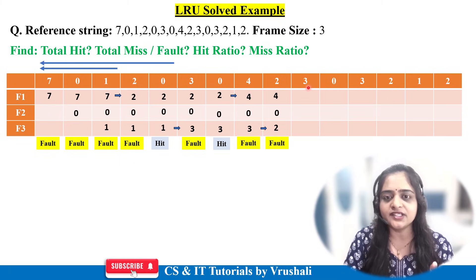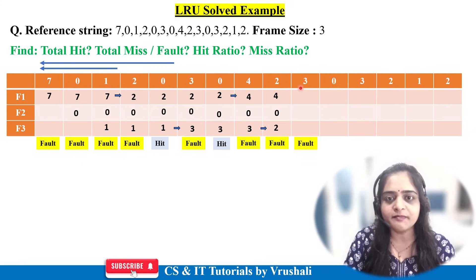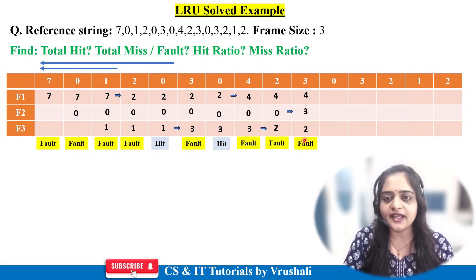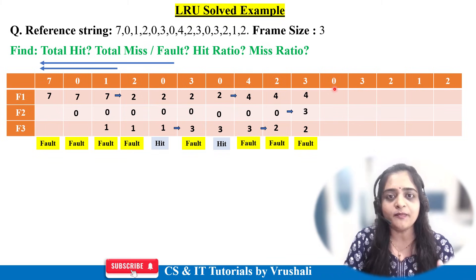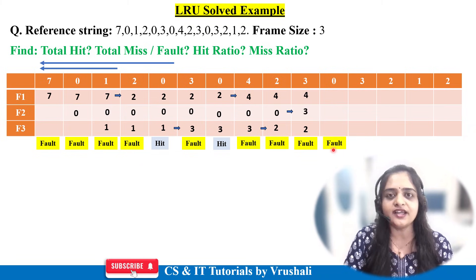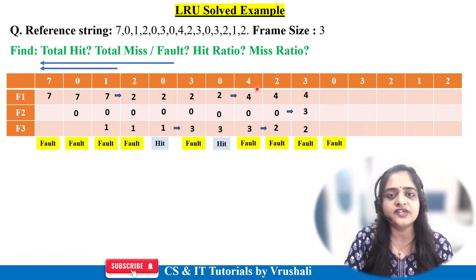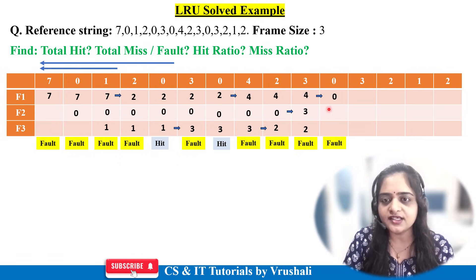Next, the CPU demands page number 3 — not present, page fault. Compare previous pages: 2, 0, and 4. The order from most to least recently used is 2, 4, 0. So the least recently used is 0 — replace page 0 with page 3. Next, the CPU demands page number 0 — not present, page fault. Compare 4, 3, and 2. The most recently used is 3, then 2, then 4. The least recently used is 4 — so replace page 4 with page 0, and keep the remaining data as is.